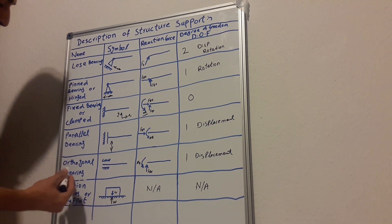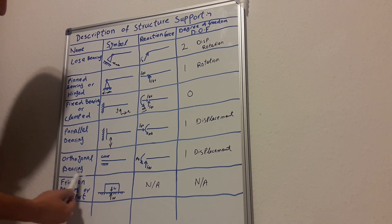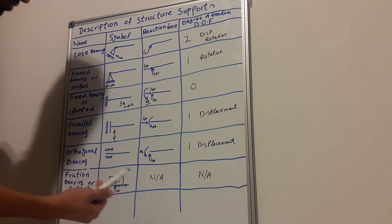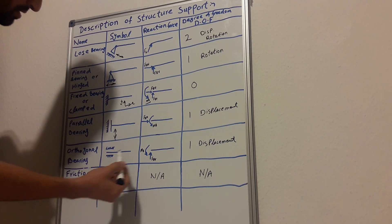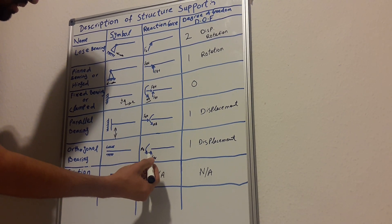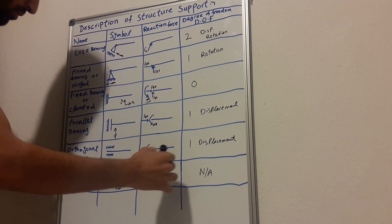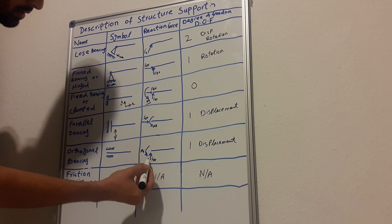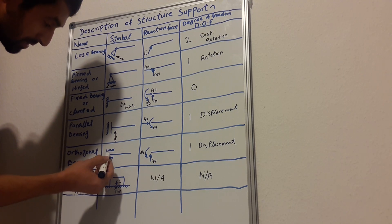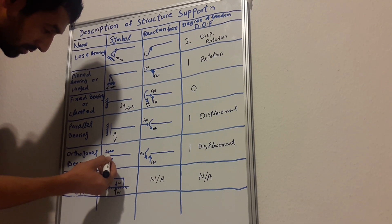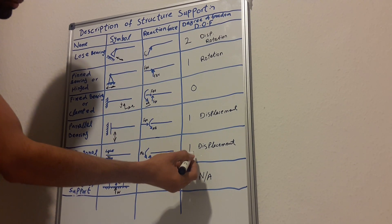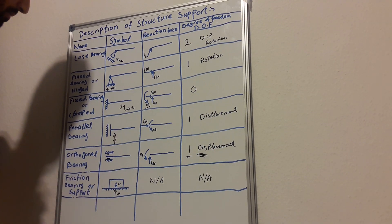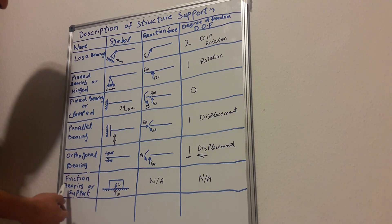The fifth one is an orthogonal bearing — orthogonal bearing and orthogonal support are the same thing. In this support, it can resist moment and it can go up and down. As you can see, there is empty space here, meaning it can displace up and down. We have displacement only — it cannot rotate, so there is no rotation.